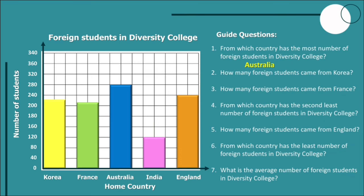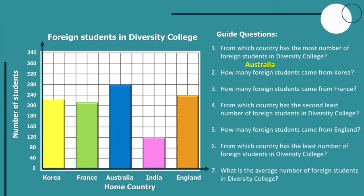Number two: how many foreign students came from Korea? As we can see on the graph, the bar is at the midpoint of 200 and 240. To get the frequency, we need to get the midpoint, and that is 220. Number three: how many foreign students came from France? We already know the midpoint of 200 and 240 is 220. Now, the bar is at the midpoint between 200 and 220, so we add 200 and 220 and divide by 2 to get the answer 210. So there are 210 students that came from France.